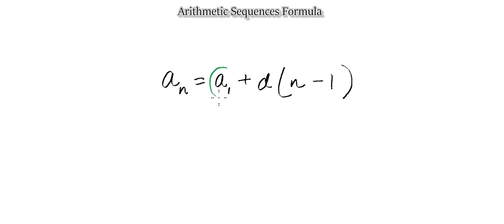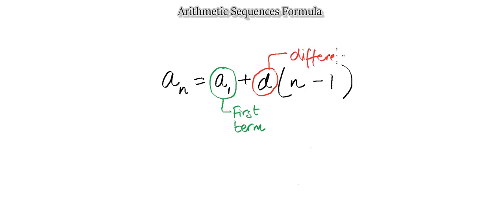Starting with a₁: 'a' is always going to be the first term of the sequence. Moving on to 'd': d will always be the difference between two consecutive terms. Lastly, 'n' is the nth term — that's the term we're trying to find. This n in the subscript and this n in the bracket are exactly the same.